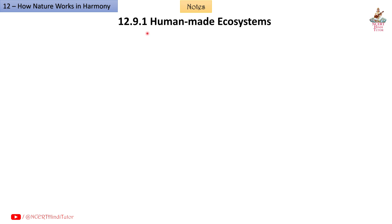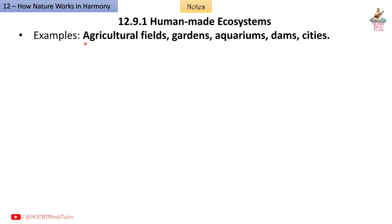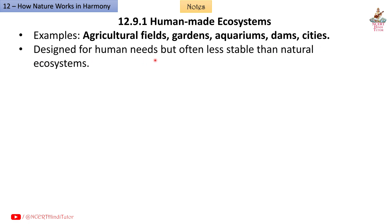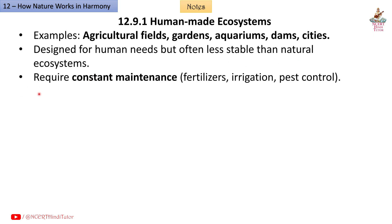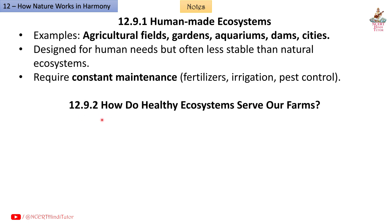12.9.1: Human-made ecosystems. Examples: agricultural fields, gardens, aquariums, dams, cities. Designed for human needs but often less stable than natural ecosystems. Require constant maintenance — fertilizers, irrigation, and pest control.